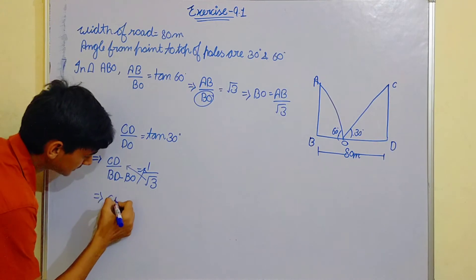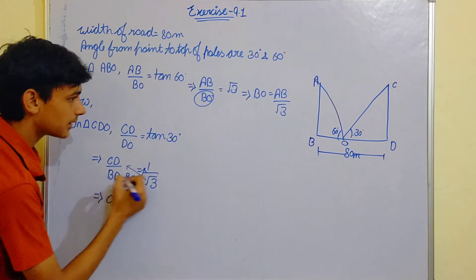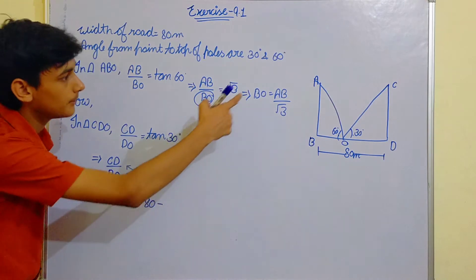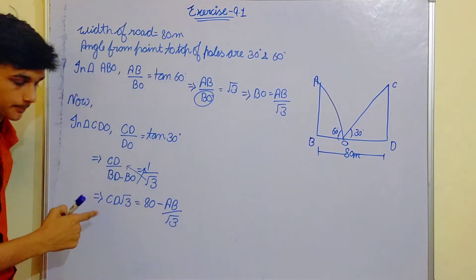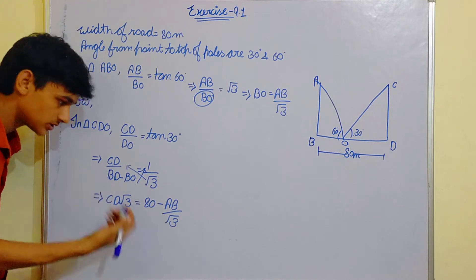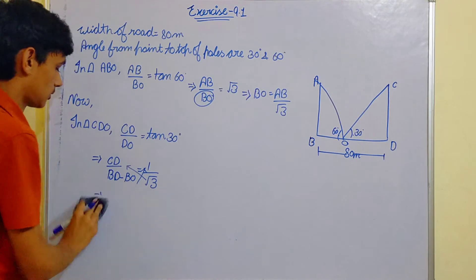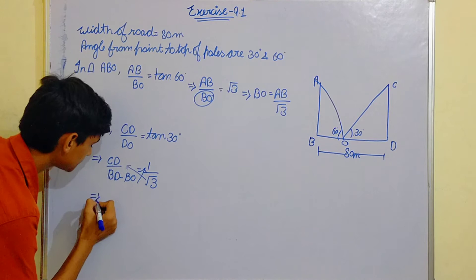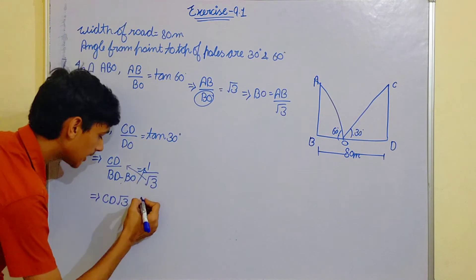is equals to tan theta which is 1 by root 3. Now do the cross multiplication. CD root 3 is equals to BD, BD is 80 minus DO which is AB by root 3.